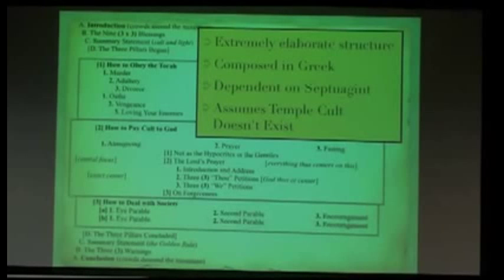And one of the things that Allison pointed out is that the three pillars that the sermon is constructed of, which is how to obey the Torah, how to pay cult to God, and how to deal with society. Those are the three structural components of the Sermon on the Mount.